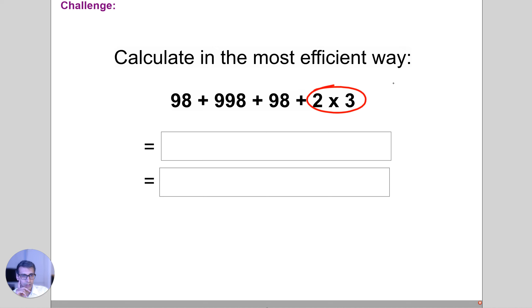We've got two times three. Now this is the same as two lots of three or three lots of two. Now if you have three lots of two, that's just the same as 2 + 2 + 2.